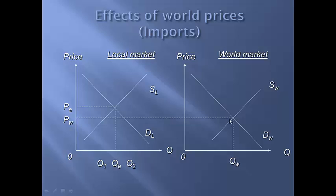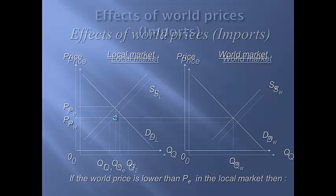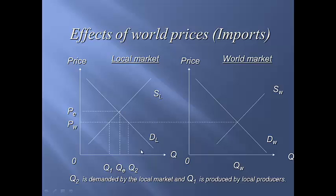What happens with imports? In this instance, and this is more commonly the case — especially in relation to car manufacturers — the world price PW is lower than our operating equilibrium price. So that creates a different type of scenario. If PW is lower than our PE, that means a shortage of Q2 minus Q1 is created. In the local market, the quantity demanded is relatively higher, but our local manufacturers can't compete, and they're only willing to produce Q1. So Q2 is demanded by consumers, but only Q1 is supplied by local manufacturers.